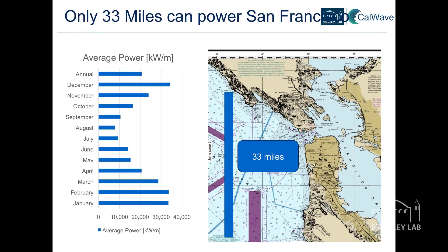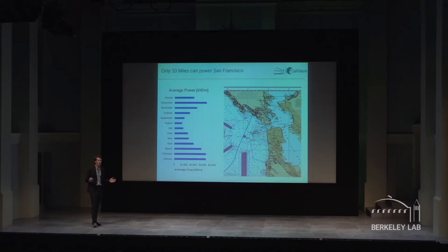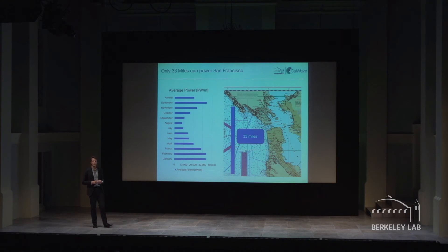Now that we better understand the resource and the technology, we can come back to our original question and look more closely at San Francisco. The average annual wave power here is quite seasonal, but on average it has around 20 kilowatts per meter — that's 30 times higher than wind and solar. So with a single strip of 33 miles and a device like ours working at 60% efficiency, we could power all of San Francisco.